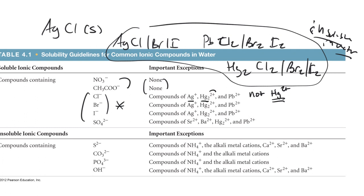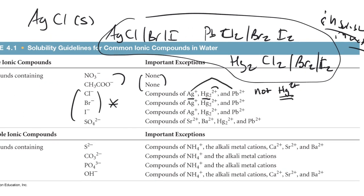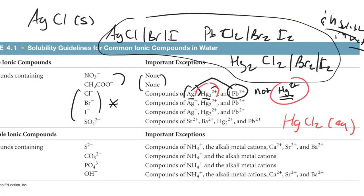Lead is a little unusual — in batteries and highly acidic conditions you can form Pb⁴⁺, but it's very rare in ordinary aqueous preparation. Mercury is the tricky one: mercury(I) salts are insoluble, but mercury(II) salts are completely soluble. So HgCl₂ mixed in water would dissolve into its ions. Mercury(II) bromide and mercury(II) iodide are also water soluble. Any other cation with chloride, bromide, or iodide — like calcium chloride or copper chloride — is water soluble.